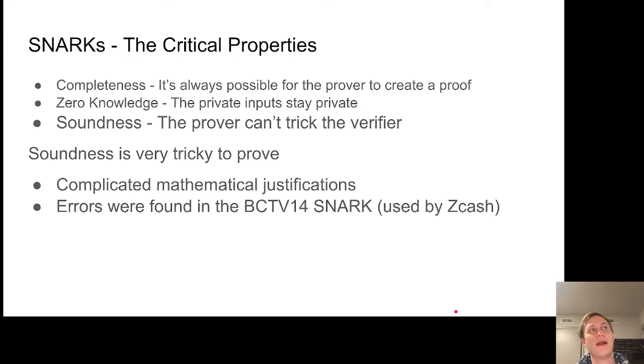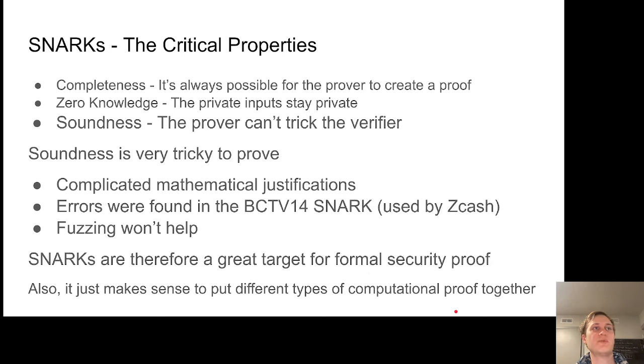Errors have been found before. For example, the bctv14 SNARK used by the Zcash cryptocurrency had an error found, and there was potential for money to be stolen until this error was fixed. Another hard part is that fuzz testing doesn't really help because you have a whole space of adversarial attacks that could potentially compromise your SNARK. Just guessing random inputs won't reveal what the holes are. This is what makes SNARKs a great target for formal security proofs.